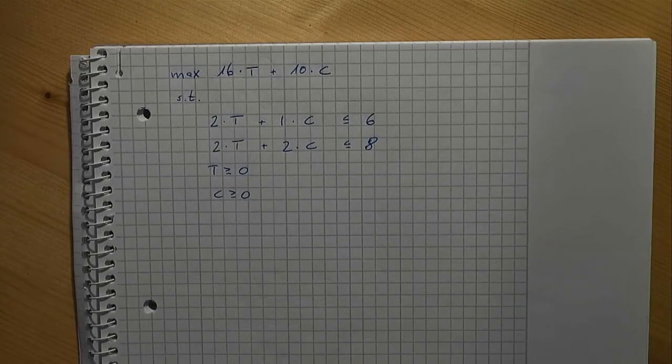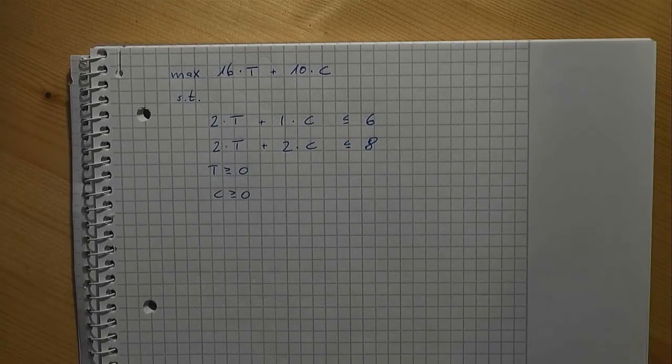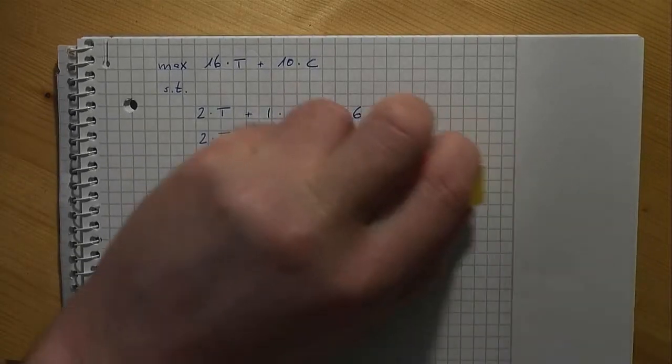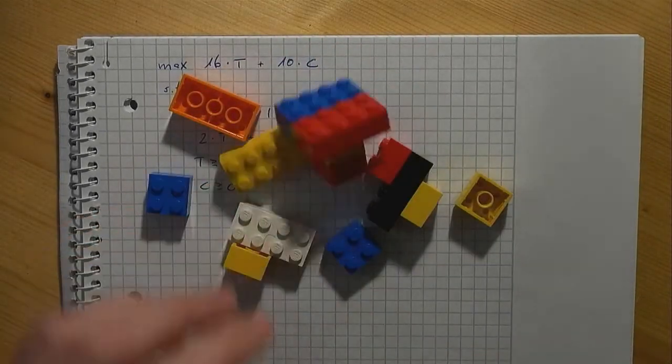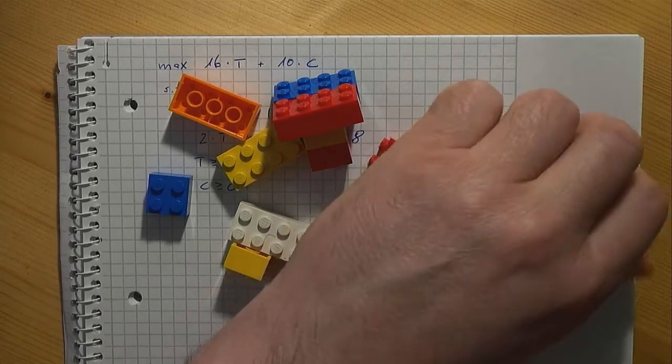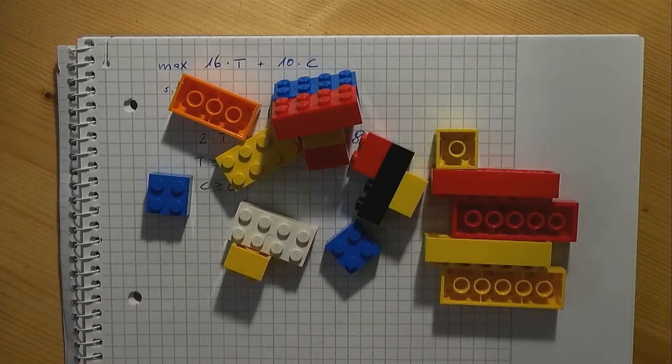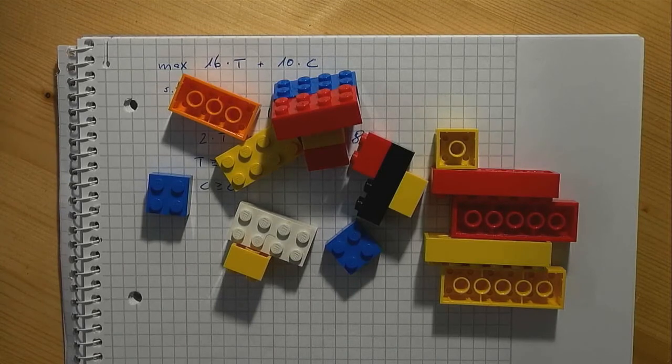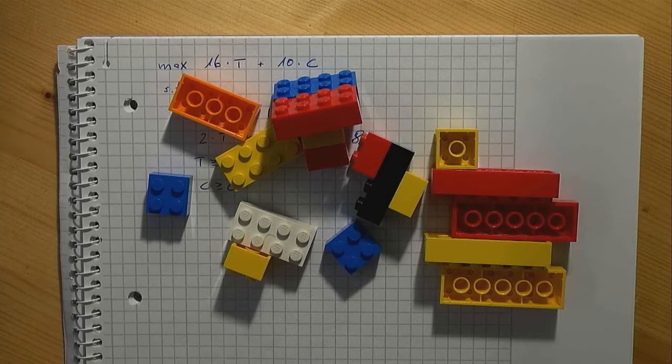Imagine now that an additional part type, a 2x6, can be used and suppose that four of them are available. With this new part we can create a new type of furniture, a lounger.